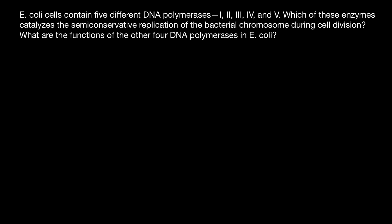Hello and welcome to Nikolai's genetics lessons. Today's question is: E. coli cells contain five different DNA polymerases — 1, 2, 3, 4, and 5. Which of these enzymes catalyzes the semi-conservative replication of the bacterial chromosome during cell division? And what are the functions of the other four DNA polymerases in E. coli?